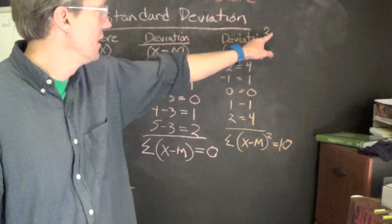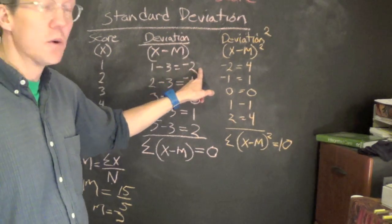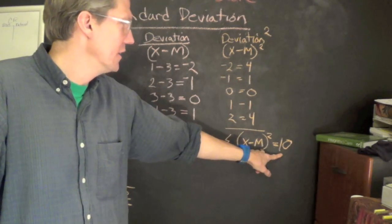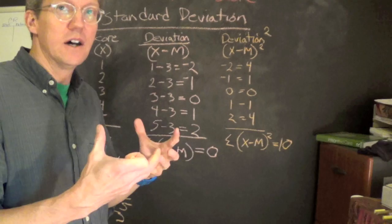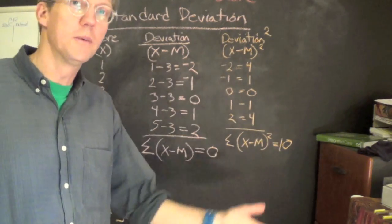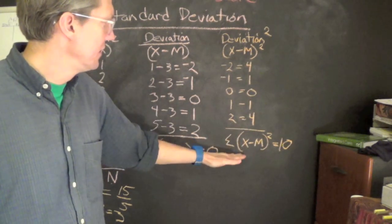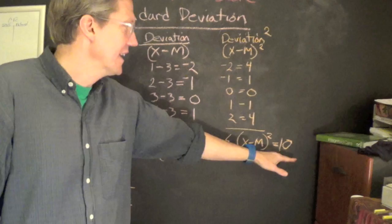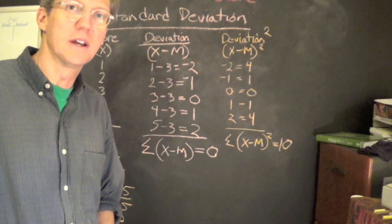This is the reason why we square our deviation in order to get rid of the negatives and so that we can actually get a number that we can begin to use to calculate and get a centralized idea of the deviation units. So here what we do is we take negative two and square it and we get four. Square the one, we get one, zero. And so when we add this up, we take the sum of X minus M squared, we get 10. And we will take that to then determine the variance, which we'll show you in the next segment.